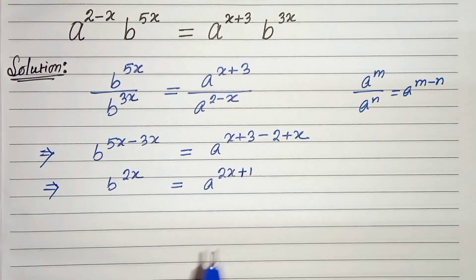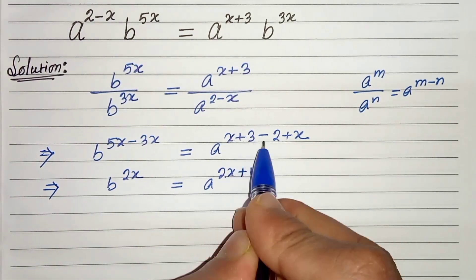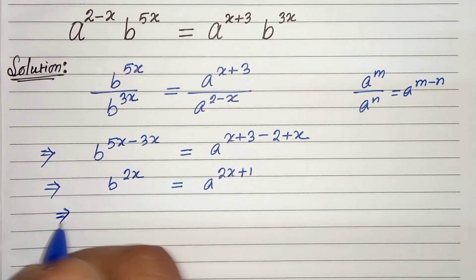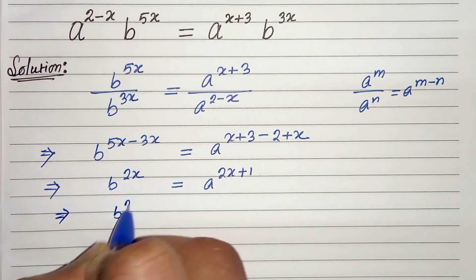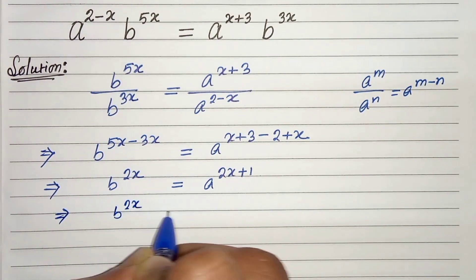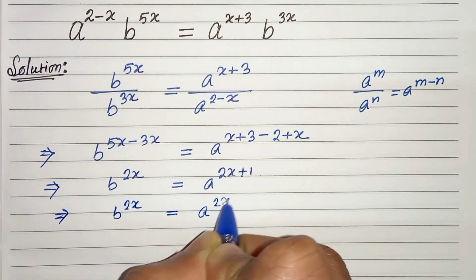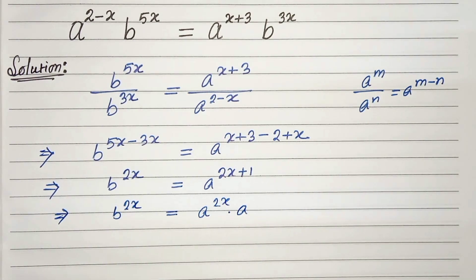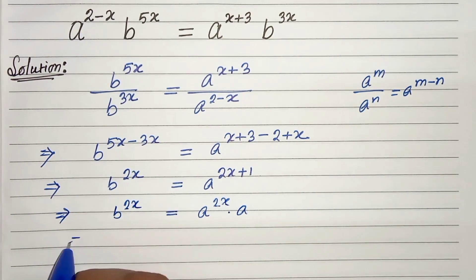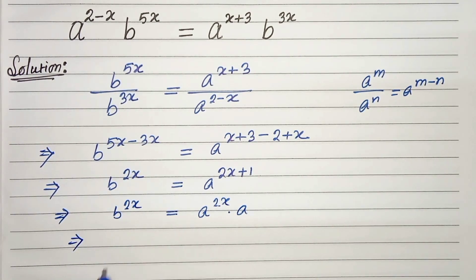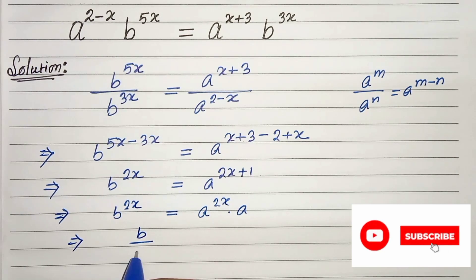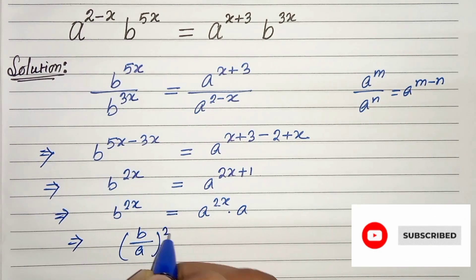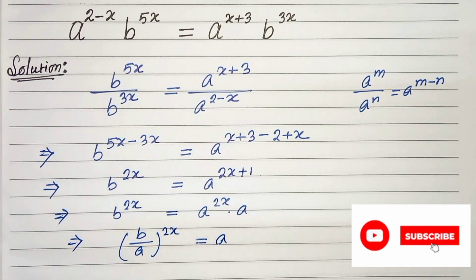It will be plus — plus 3 minus 2 is plus 1. In the next step we can write b to the power 2x equals a to the power 2x times a. And in the next step let's take a to the left hand side. So we will get b by a, whole to the power 2x, equals a.